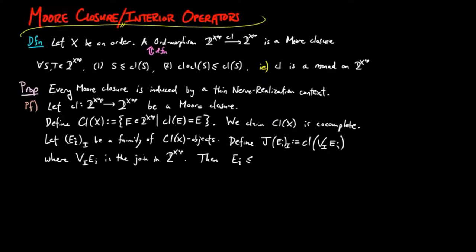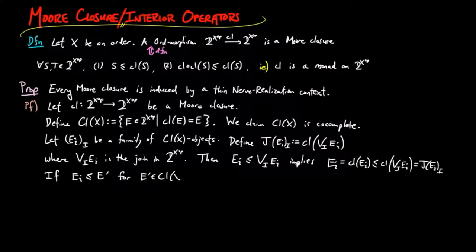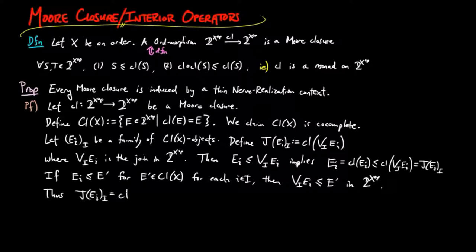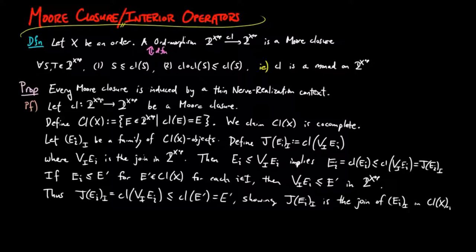Since e_i is less than or equal to the join of e_i, this implies that e_i equals the closure of e_i, which is less than or equal to the closure of the join of e_i, which is the join on e_i. If e_i is less than or equal to e prime for a closed set e prime for each i, then the join of e_i is less than or equal to e prime in the downward closed subsets of x. Thus the join on e_i equals the closure of the join on e_i, which is less than or equal to the closure of e prime, which equals e prime since e prime is closed. This shows that the join of e_i is the join of the family e_i in the set of closed sets.